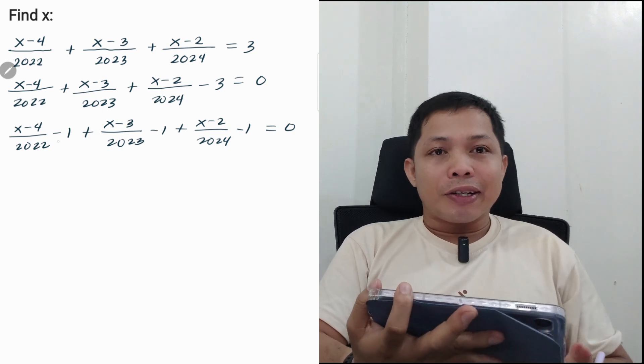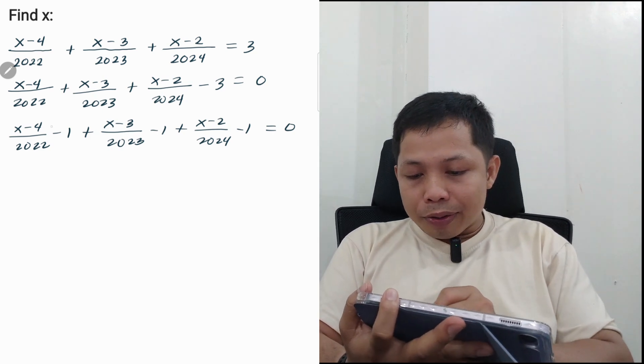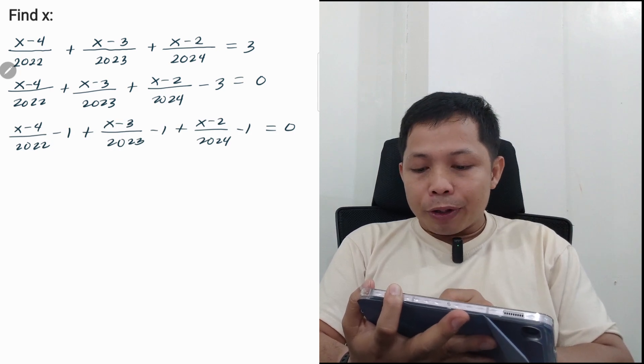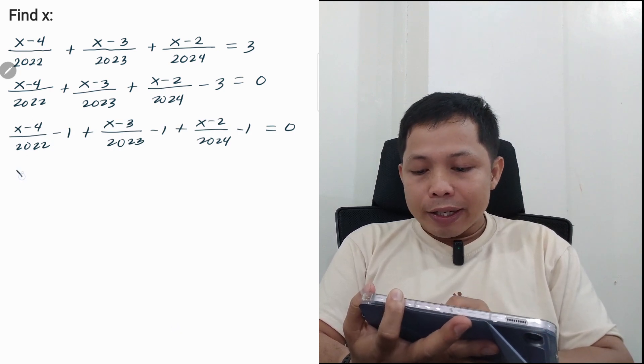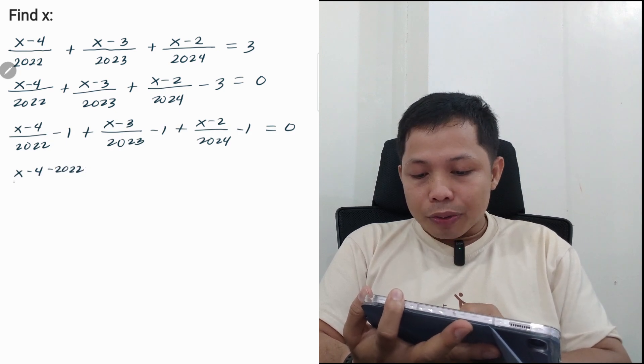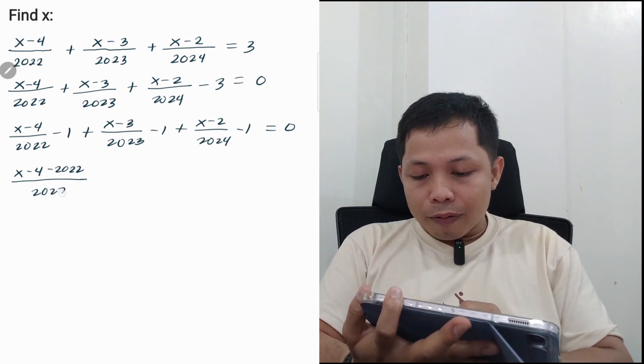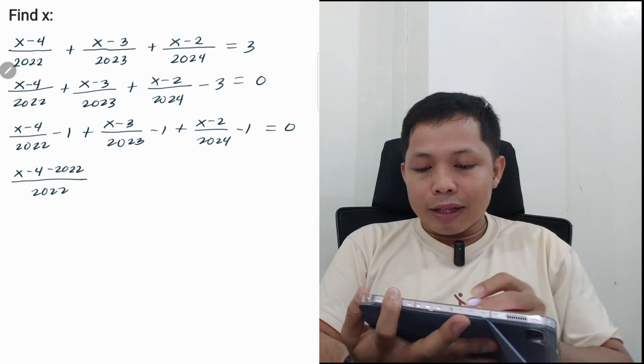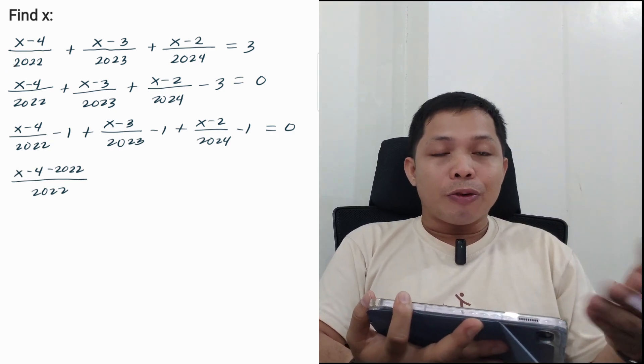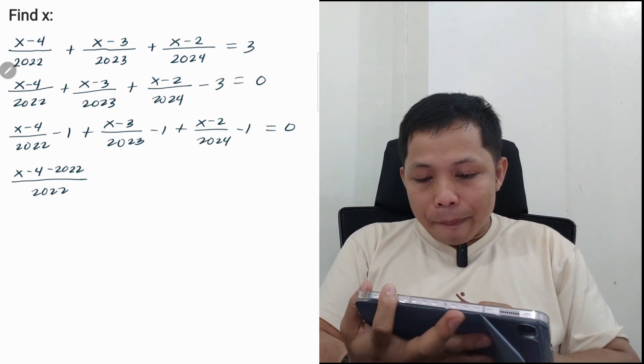Now, let us simplify each term. So this (x - 4)/2022 - 1 can be written as (x - 4 - 2022)/2022, because 1 can be expressed as 2022/2022.